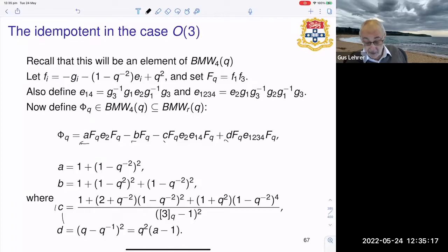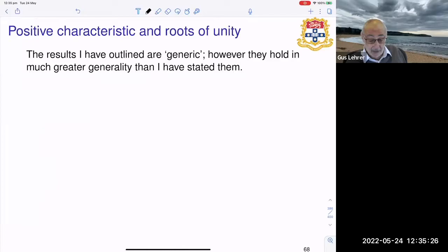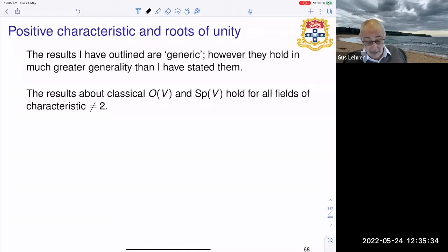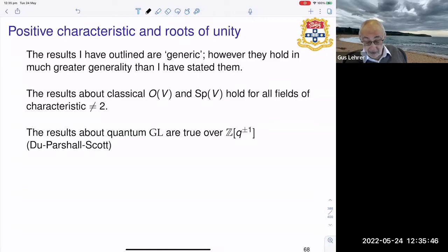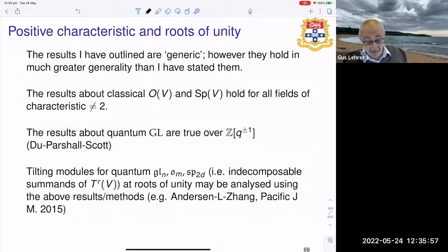The results I've outlined are generic, but they hold in a lot more generality than I've stated them. So for example in the classical cases the results are true in all characteristics other than two. We have integrality results in the quantum case, so they're true over Z rather than C. The tilting modules for the classical Lie algebras at roots of unity in the quantum case can be analyzed using the above results. As an example you can see the diagrammatic methods in this paper which Ruben and I wrote with Anderson in the Pacific Journal a few years ago.